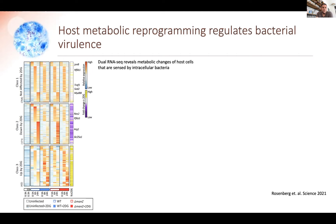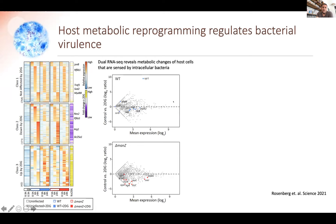Looking at what happens to the bacteria, in the wild type you can see that SgrS is induced, indicative of metabolic stress — those are bacterial cells exposed to the chemical inhibitor. But when we use the mutant, SgrS is no longer expressed. What we were surprised to find is that the entire type three secretion system genes are not induced if you do not allow the metabolic shift to go on. This means the bacteria somehow senses what is going on with the metabolic shift of the macrophage, allowing timely gene expression.